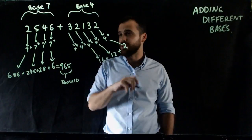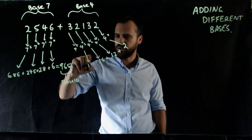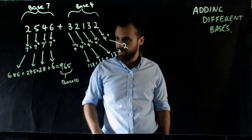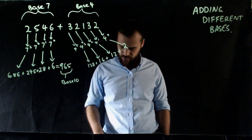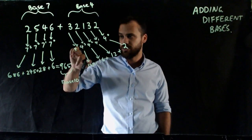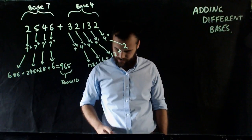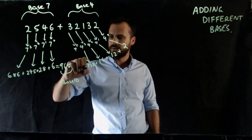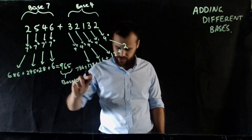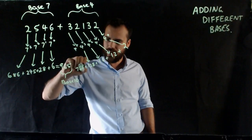4 cubed, which is 64 — so 2 times 64 is going to be 128. And then this one I'm going to need to calculate: 4 to the 4 is 256. 256 times 3 — that's 768.